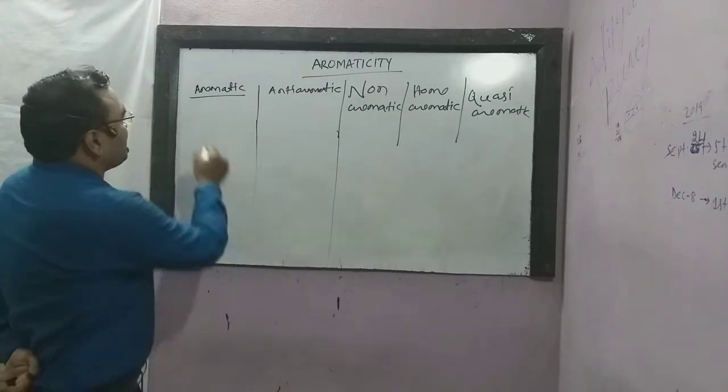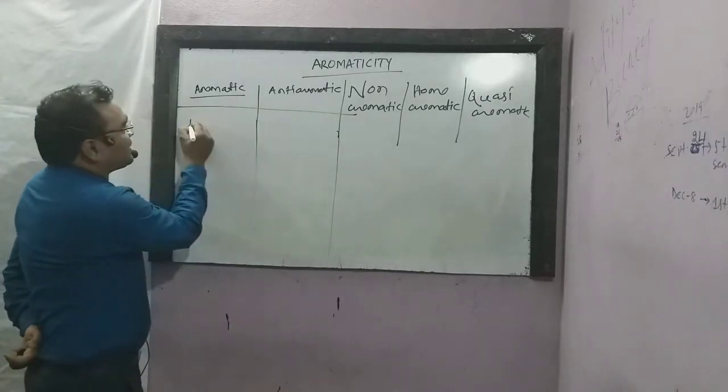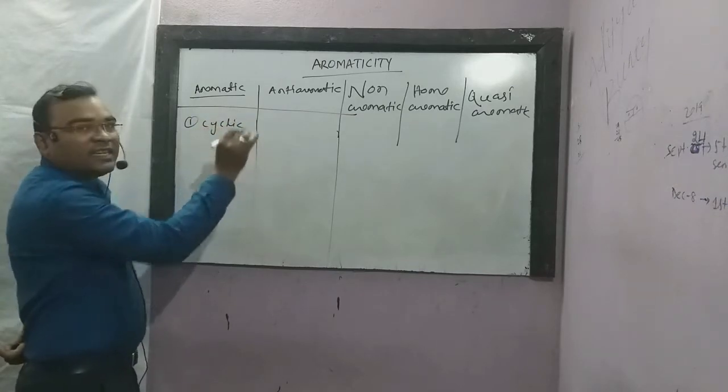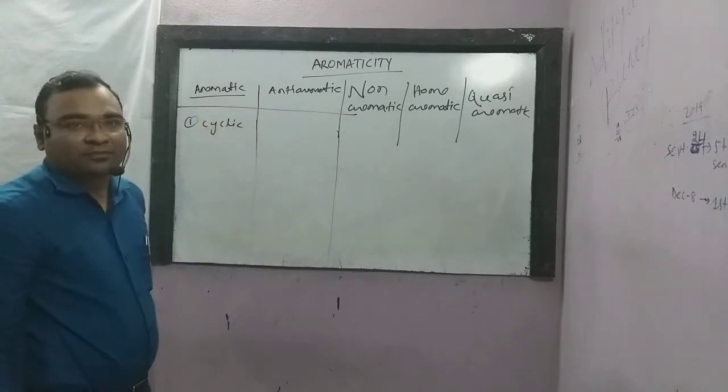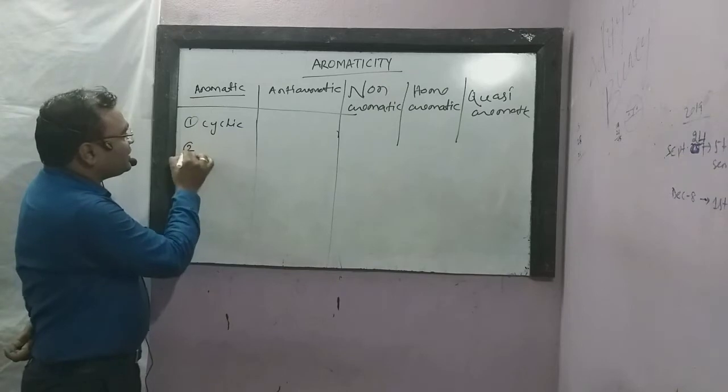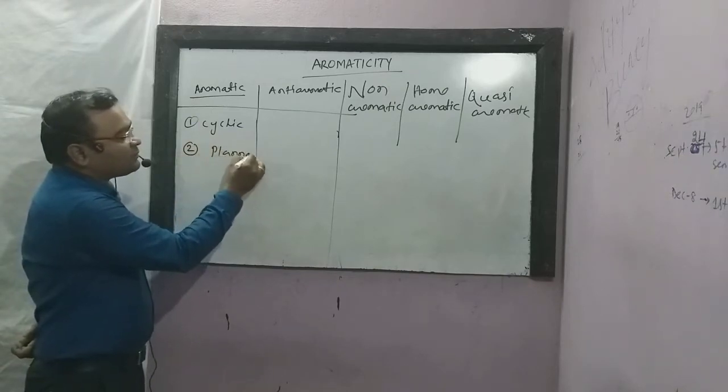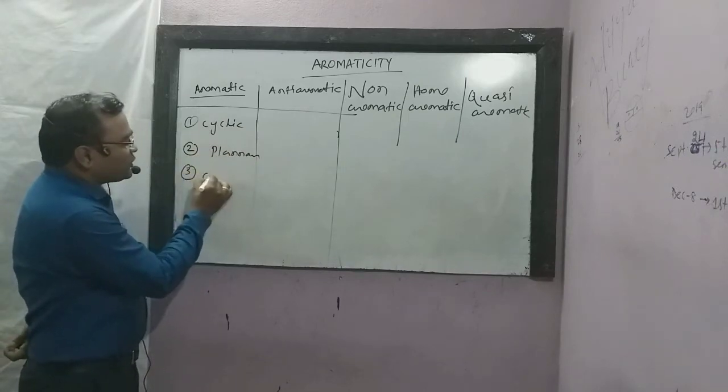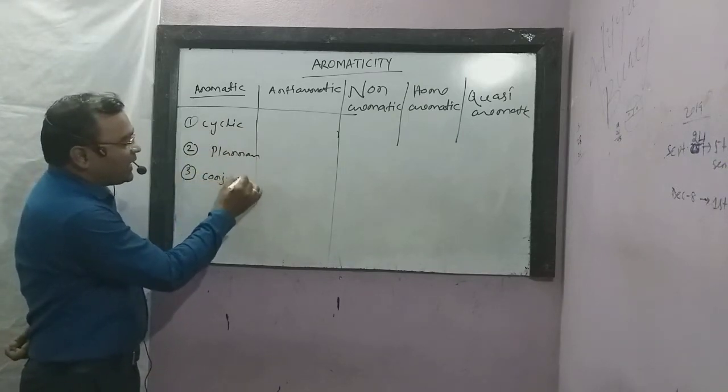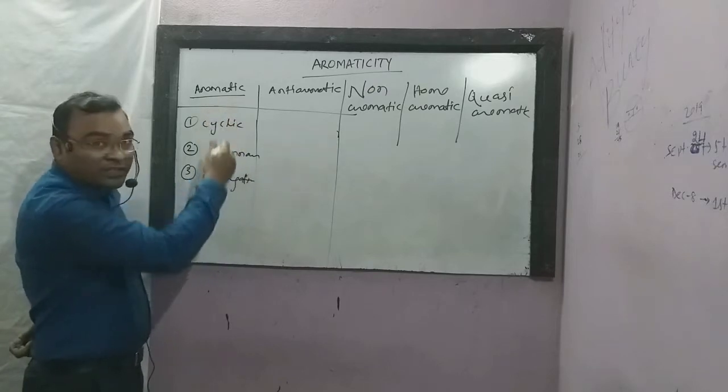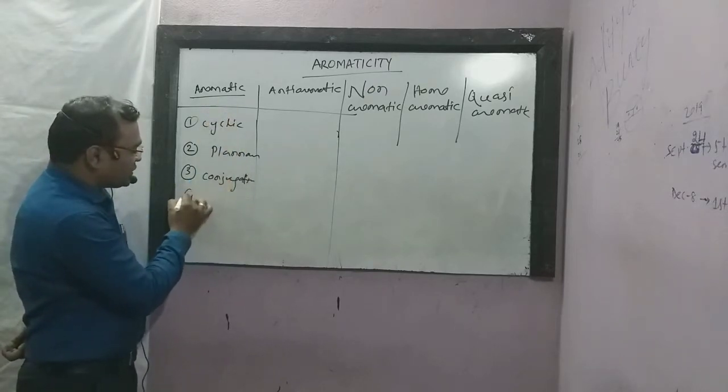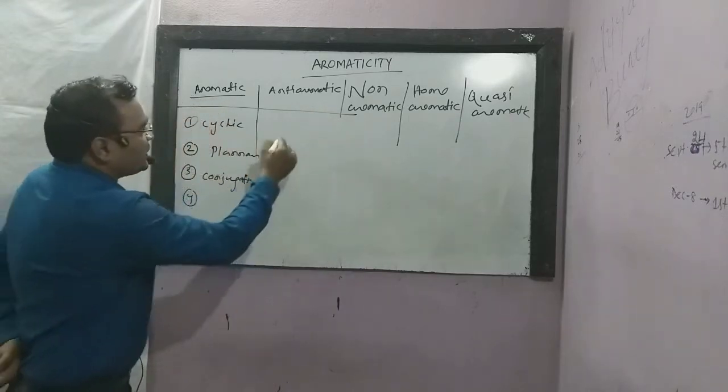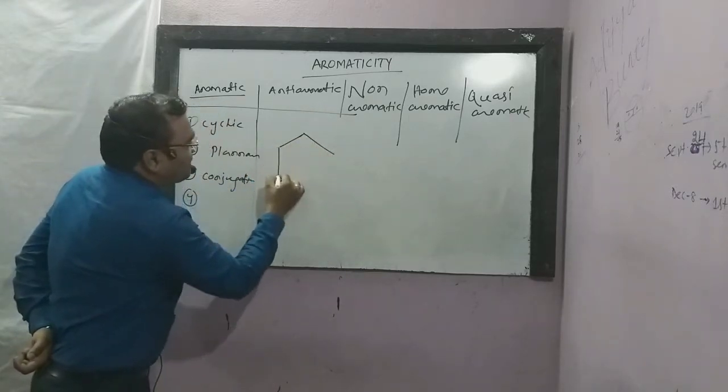The conditions of Aromaticity are: First, the compound must be cyclic in nature. Second, the compound must be planar in nature. Third, it must have conjugation of pi electrons. Fourth condition I will discuss with examples.